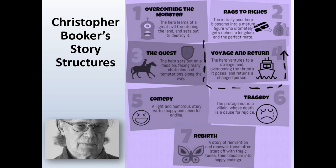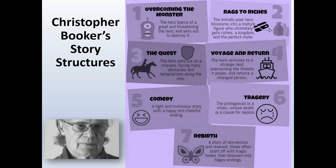Number four is voyage and return, in which the hero ventures out to a strange land full of new curiosities, overcomes any threats that land may pose, and returns a changed person. The key difference from the quest is that there is a change to the protagonist at the end of voyage and return, whereas in the quest the protagonist often remains a static character. The fifth narrative structure is comedy — a light and humorous story with a happy, cheerful ending.